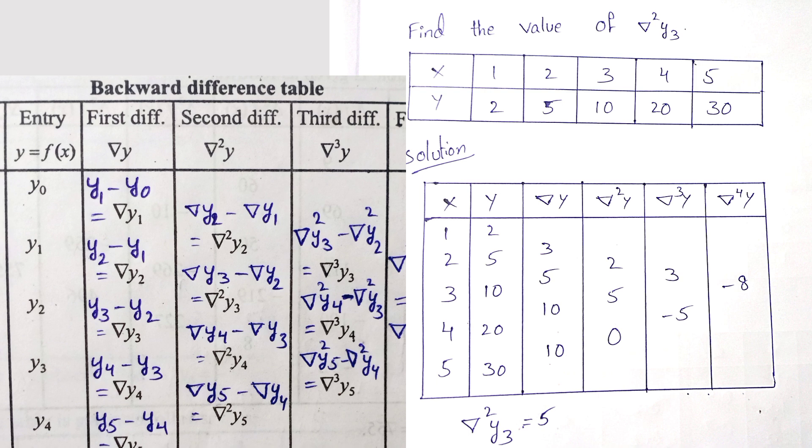Nabla y values. Next nabla square y values. Nabla square y2 value. 5 minus 3, 5 is nabla y2, 3 is nabla y1, nabla y2 minus nabla y1 gives nabla square y2 value 2. Next nabla square y3, 10 minus 5 equal to 5. Next nabla square y4 value, 10 minus 10 equal to 0.